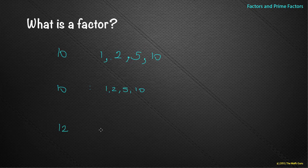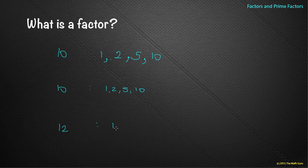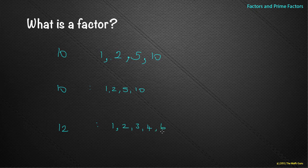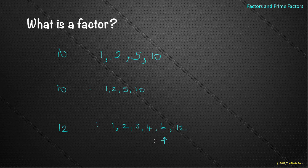What about twelve? Well, one is always a factor — you can always write that down. Factors are generally smaller than or equal to the number given. One is there, two is there, three divides into twelve, four does, five doesn't, six does, seven, eight, nine, ten, eleven don't, but twelve does. And notice that once I got to six — halfway — there was very little point thinking about other numbers.